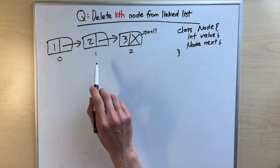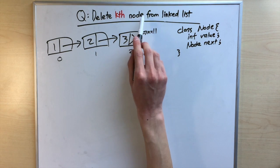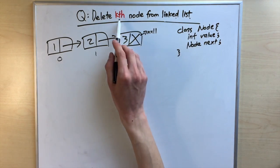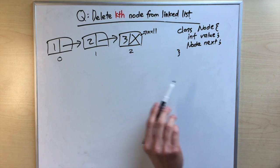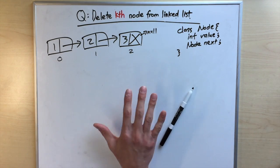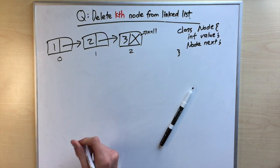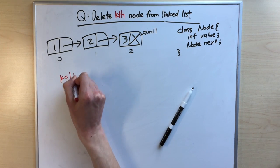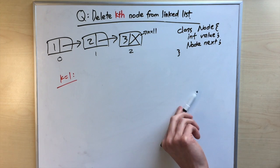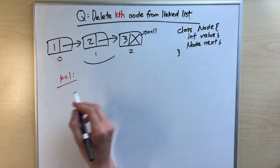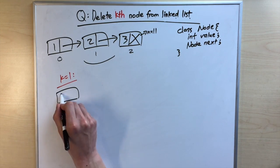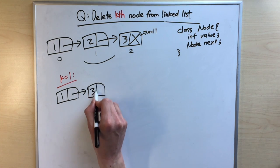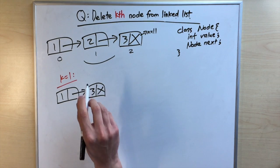The problem asks us to delete the node at index k. For example, if k equals one, we'd remove the middle node, so the linked list would become the node containing one pointing to the node containing three.